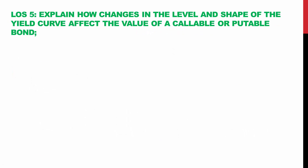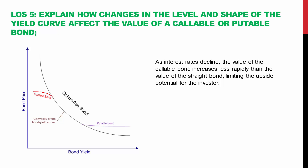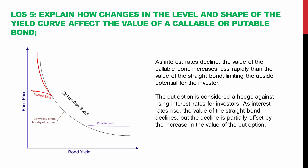The next learning outcome expects you to explain how changes in the level and shape of the yield curve affect the value of a callable or putable bond. The black curve represents the convexity of an option-free bond. As interest rates decline and bond yields fall, the value of a callable bond increases less rapidly than the value of a straight bond — callable bonds limit the upside potential for the investor. The put option, on the other hand, is a hedge against rising interest rates. As interest rates rise, the value of a straight bond declines much more rapidly, but this decline is partially offset by the increase in put option value — putable bonds do not fall as much as option-free bonds when rates rise.